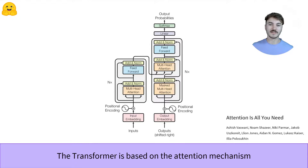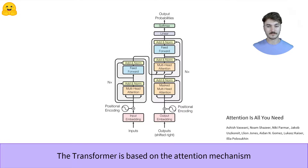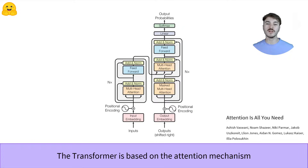To get started, we'll take up this diagram from the original transformer paper, entitled "Attention is All You Need" by Vaswani et al. As we'll see here, we can leverage only some parts of it according to what we're trying to do. We won't dive into the specific layers building up that architecture, but we'll try to understand the different ways this architecture can be used.